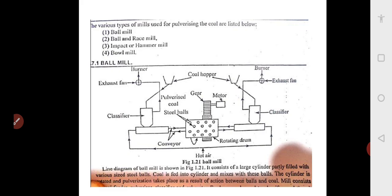Pulverizing coal requires mechanical energy, vibration, and hammering effect. There are four types of mills used for pulverizing coal: ball mill, ball and race mill, impact or hammer mill, and bowl mill. Now let's have a look at the diagram of the ball mill.